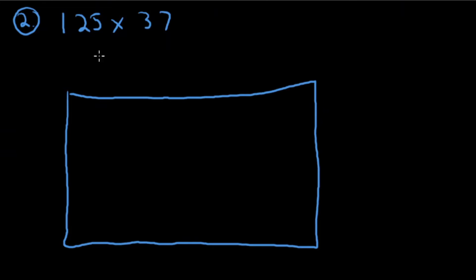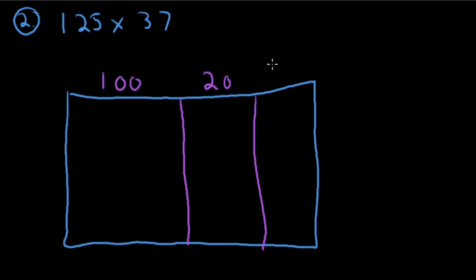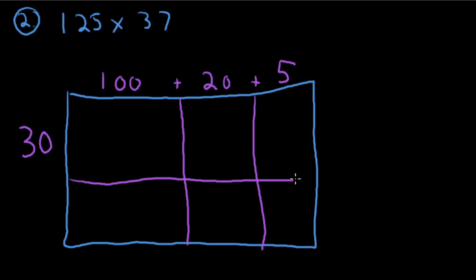Break apart 125: we've got 100, then 20, then 5 ones. Note the small addition signs — 100 plus 20 plus 5 equals 125. Then break apart 37: three tens gives us 30, seven ones gives us 7. 30 plus 7 equals 37.